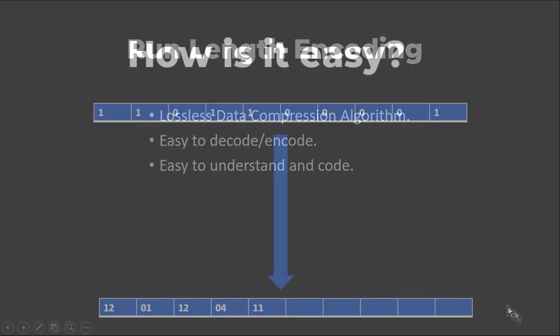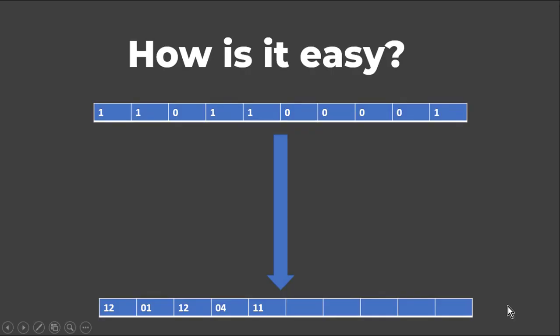So how easy is it? Here I have an example of binary data: 1 1 0 1 1 0 0 0 0 0 and 1, and there are 10 characters. So in order to compress it using run-length encoding, I will be starting from the leftmost position. The current value is 1 and now we have to find out how many times that 1 has been consecutively repeated. We can clearly see that there is 1 and here is 1.